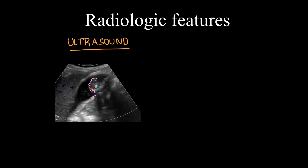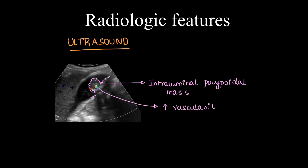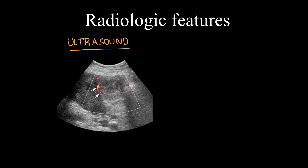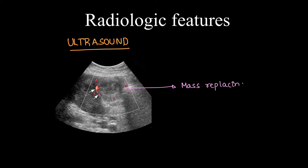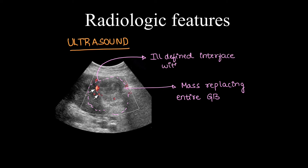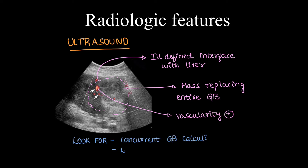Coming to ultrasound findings: here we can see a polypoid intraluminal mass type of gallbladder carcinoma showing foci of internal vascularity on color Doppler. The next type shows an ill-defined mass replacing the entire gallbladder with ill-defined interface with the liver, also with vascularity. You should look for concurrent stones in the gallbladder and perform liver screening.